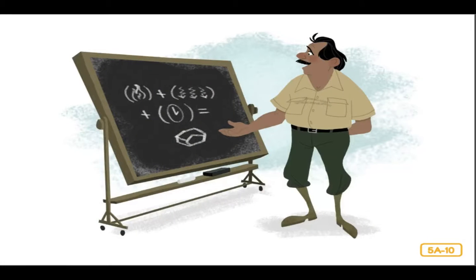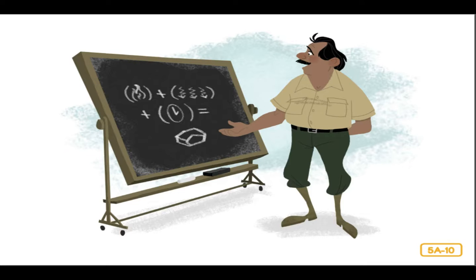Why do all these different minerals look the way they do? Each has its own story, and it gets pretty complicated. But you can bet that there were three basic things in common: heat, pressure, and time. These three factors play a role in the formation of every mineral.